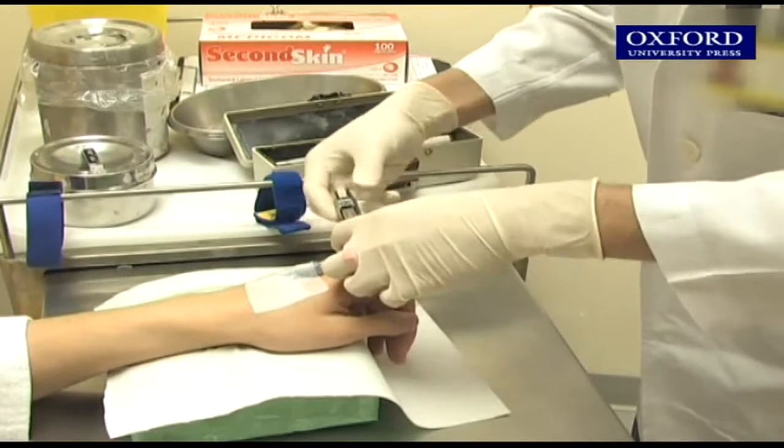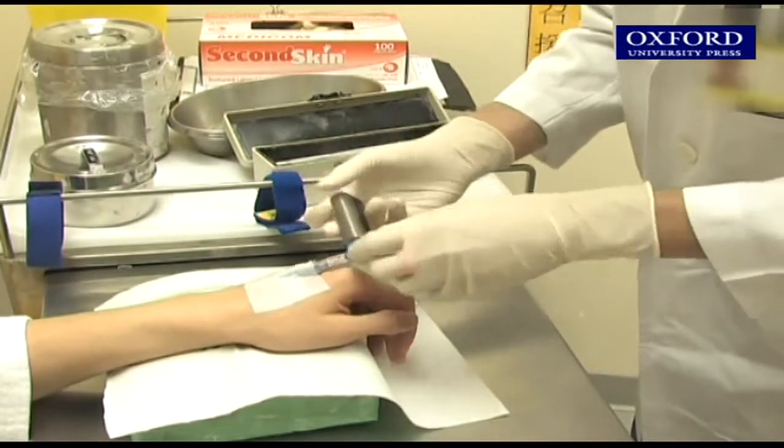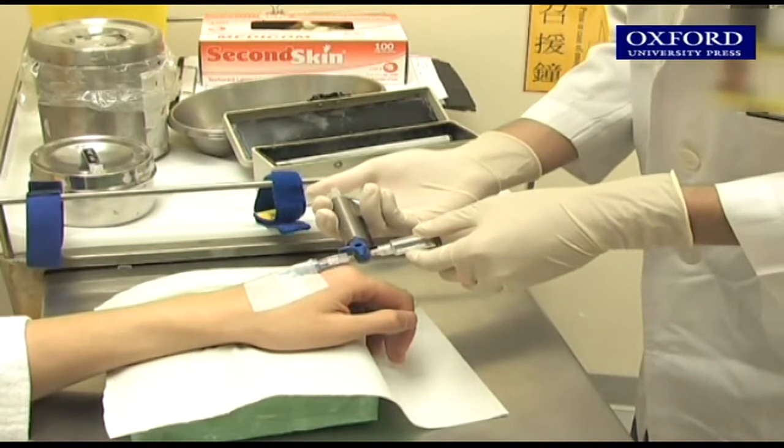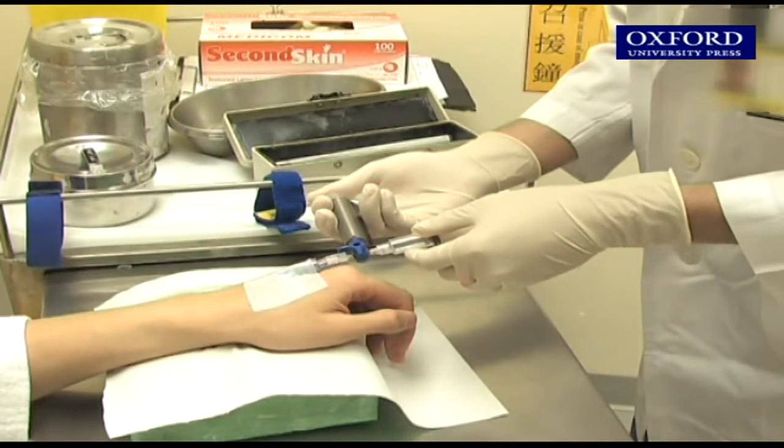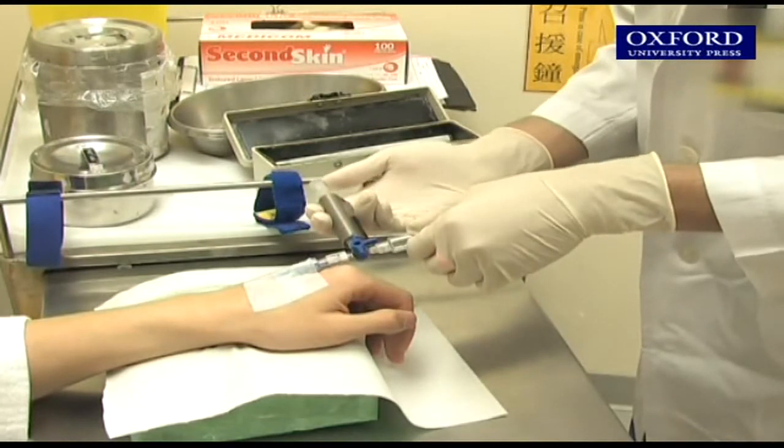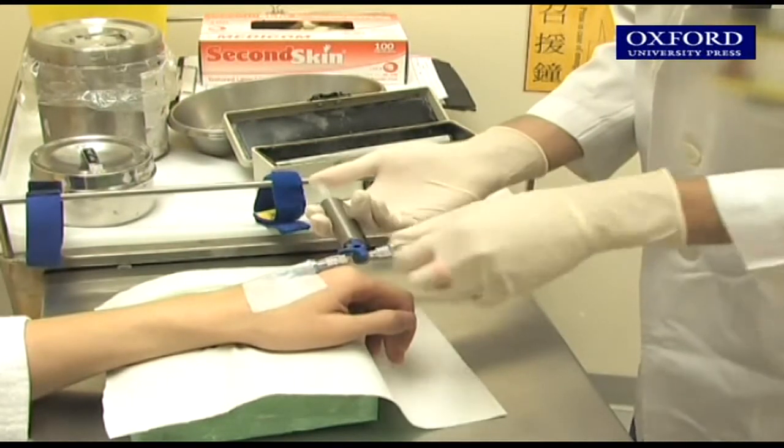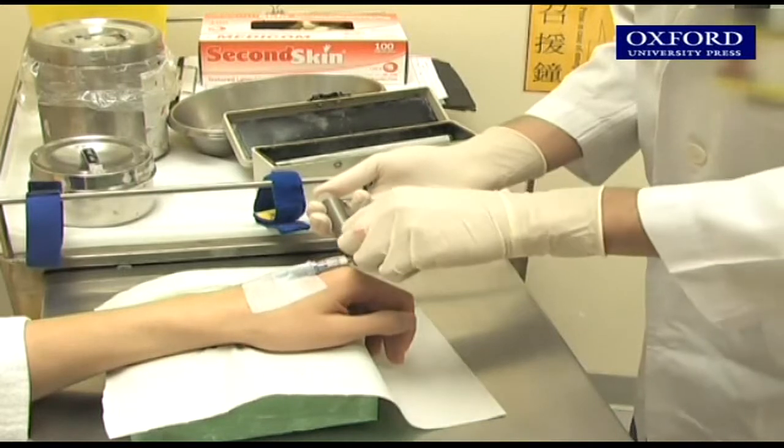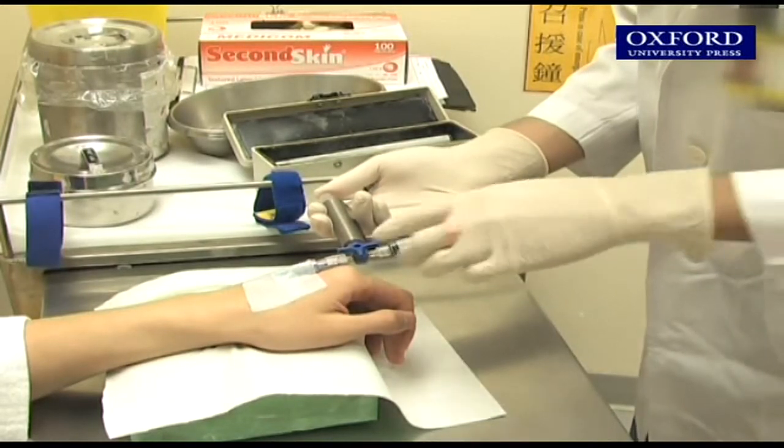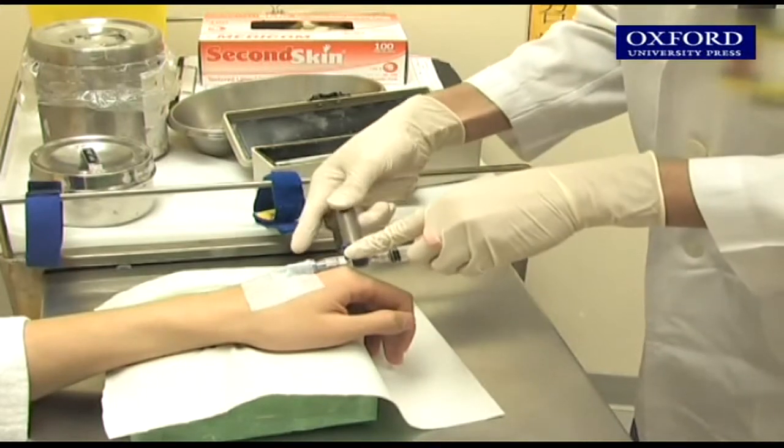Similarly, lead-covered syringes are used for injecting the radioisotopes. After the radioisotope tracer is injected into the patient's body, the patient has to wait for the tracer to accumulate in the target organ. The waiting time varies from 20 minutes to an hour depending on the target organ.